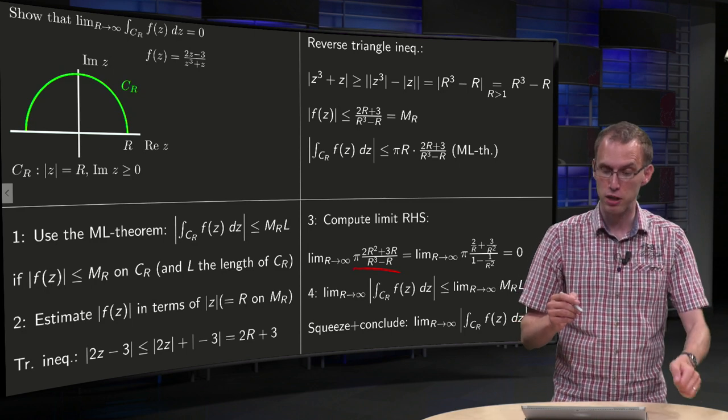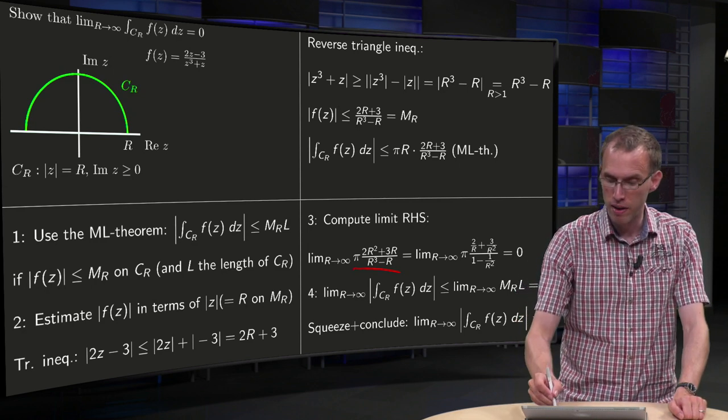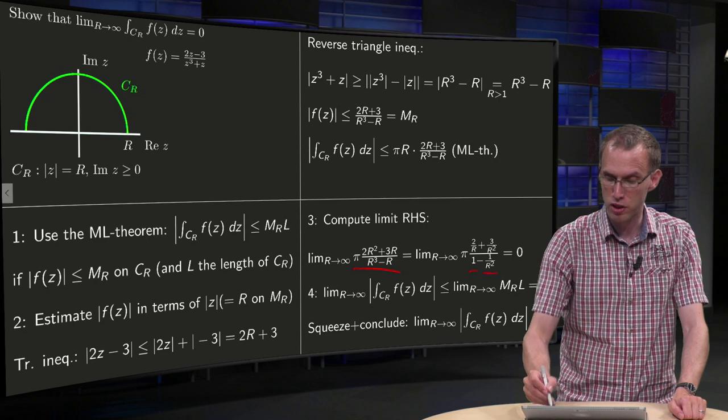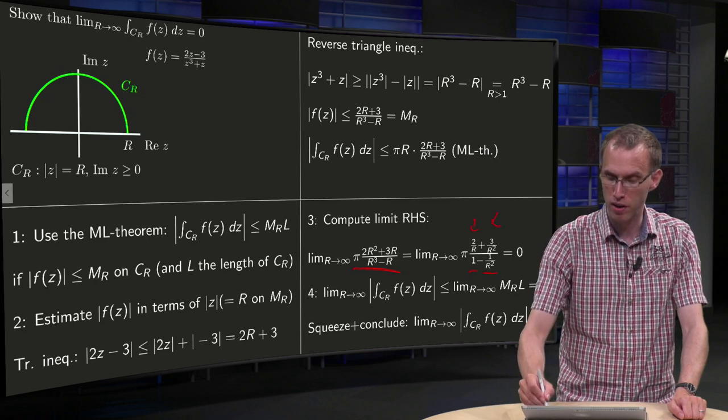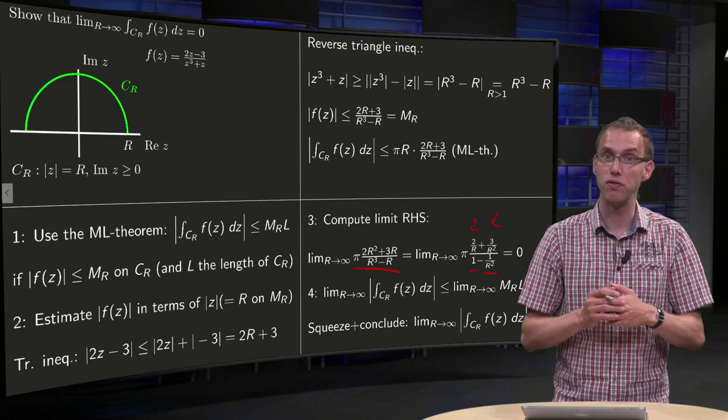We divide by the highest power of R, so we divide by R cubed, with 1 minus 1 over R squared, 2 over R and 3 over R cubed. And taking a limit of R to infinity, you can use quotient rule and sum rules.